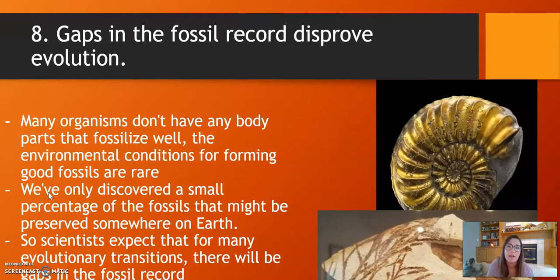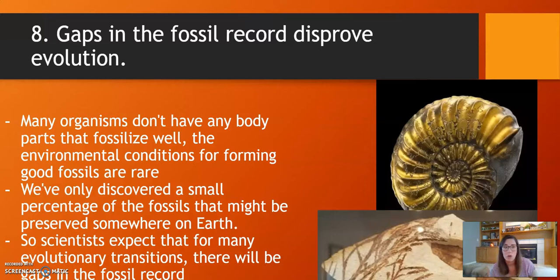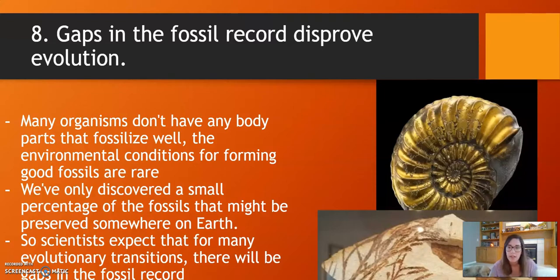Misconception eight: gaps in the fossil record disprove evolution. Many organisms don't have body parts that fossilize — hard body parts like bones and shells fossilize, but soft body parts like tissue do not. On top of that, fossils need very specific environmental conditions to be preserved: dry but not too dry, hot but not too hot, or cold but not too cold. We've only discovered a small percentage of the fossils that might be preserved somewhere on Earth. Scientists expect there will be some gaps in evolutionary transitions, and gaps in the fossil record are expected.